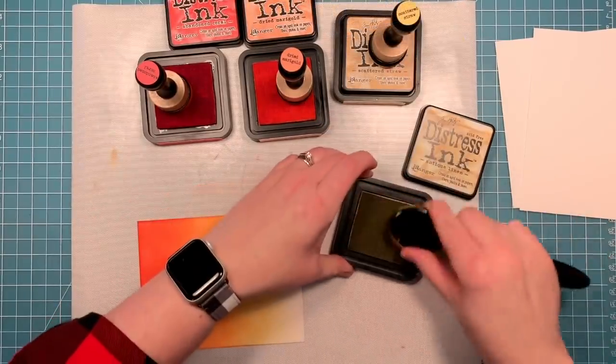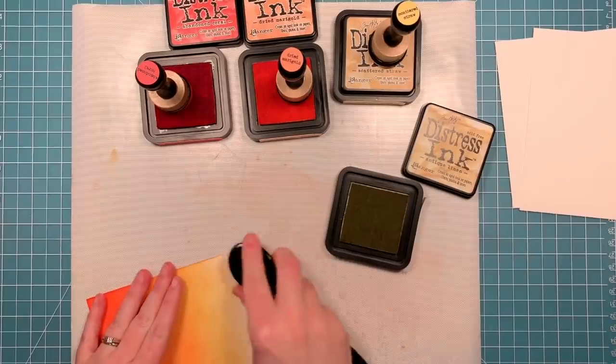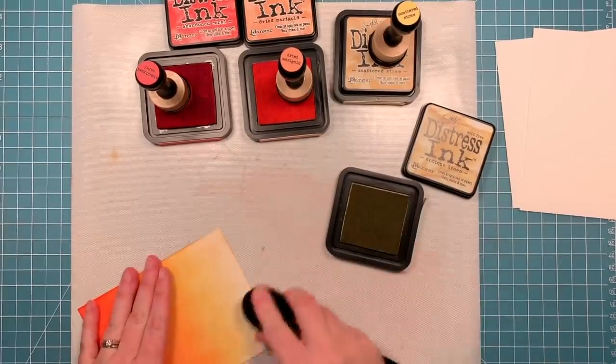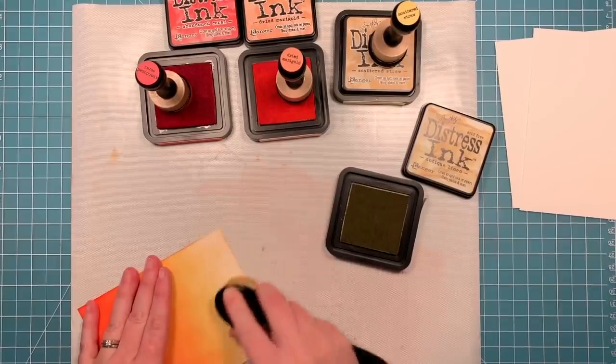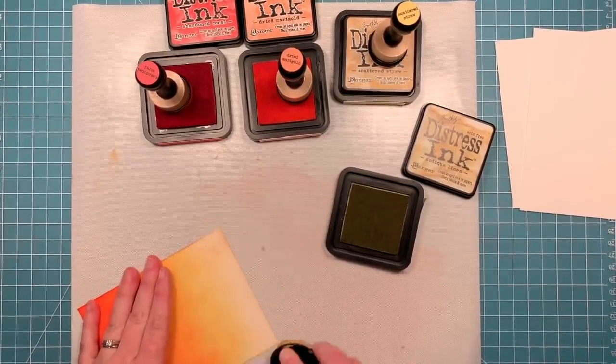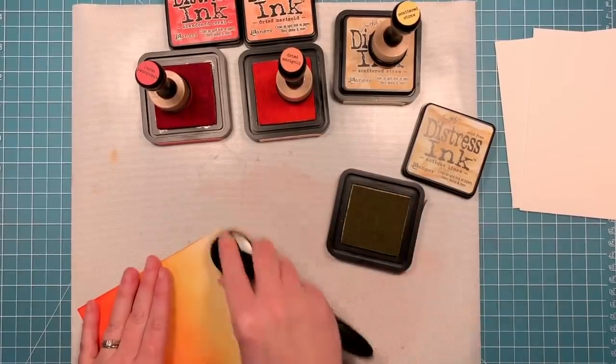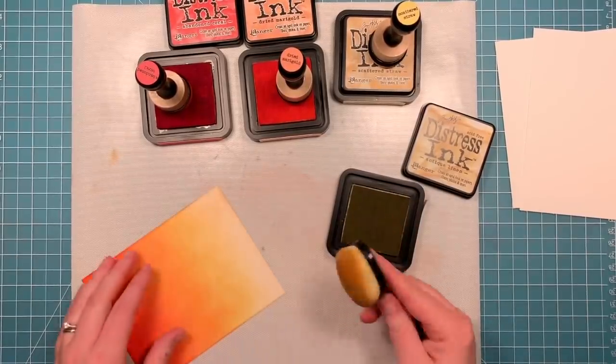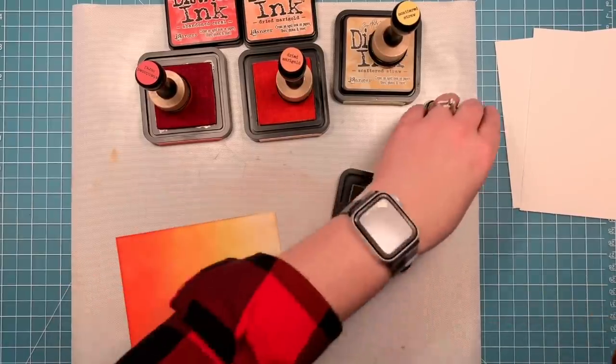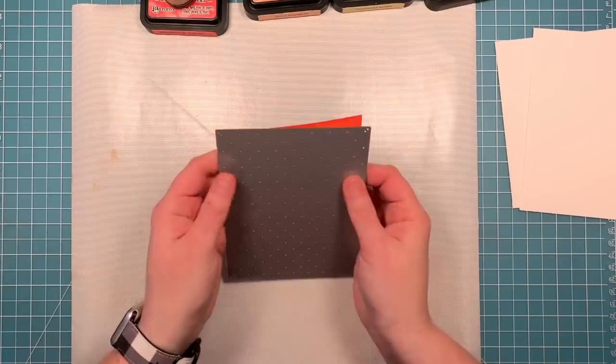I'll go in with some antique linen along the bottom. I'm actually using this blending brush. These are new to me. I just thought I'd give it a try. It's very soft and just puts down a very soft layer of the antique linen. I just wanted to kind of take the brightness of the white away slightly. I'll have to play with these brushes more and let you know how I like them.